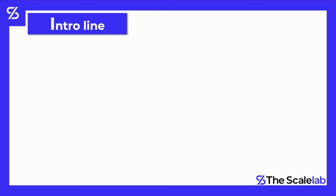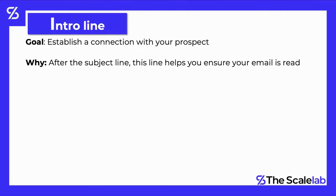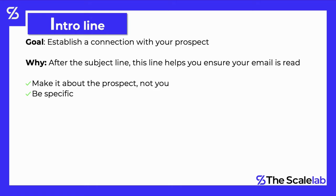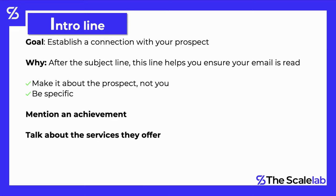The goal here is to establish a connection with your prospect. After the subject line, the intro line helps ensure your email is actually read. What I recommend is to make it about the prospect, not about you, and to be specific. You can, for instance, mention an achievement, talk about the services they offer, or highlight something you noticed on their profile or website.